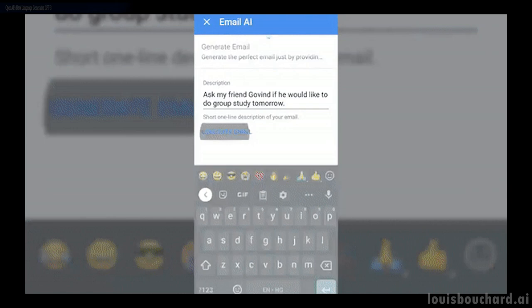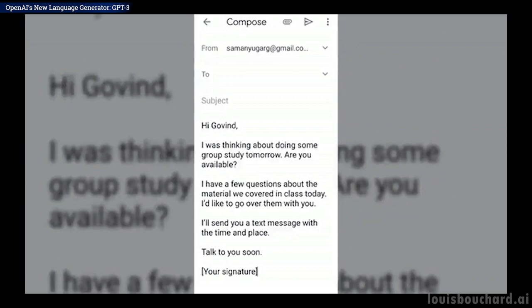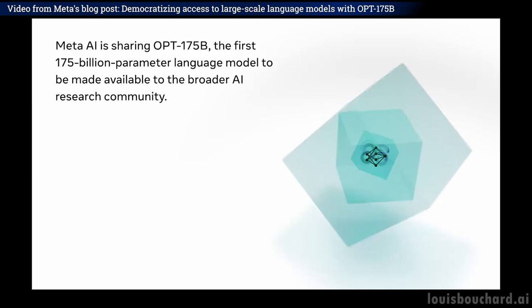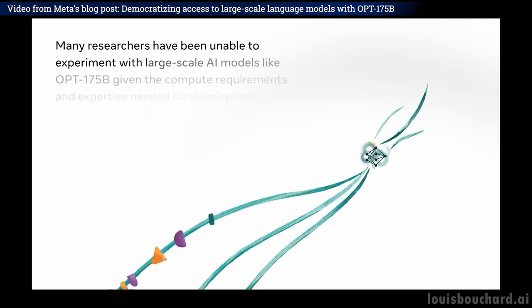This immense network was pretty much trained on the whole internet to understand how we write, exchange, and understand text. This week, Meta has taken a big step forward for the community. They just released a model that is just as powerful, if not more, and has completely open sourced it. We can now have access to a GPT-like model and play with it directly without going through an API and limited access.